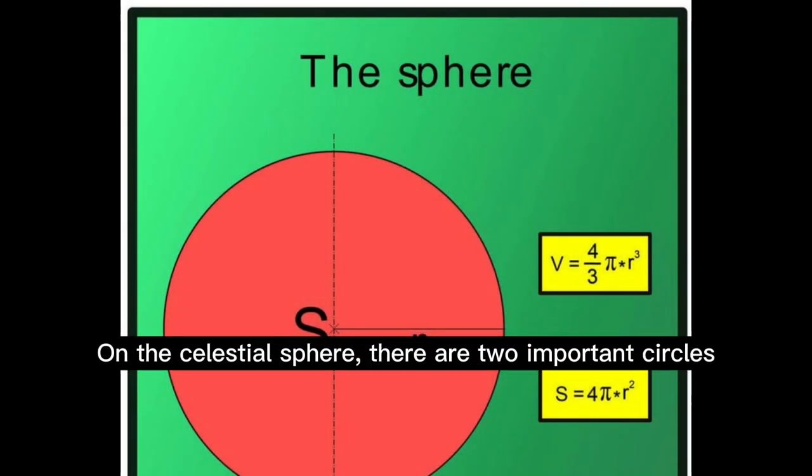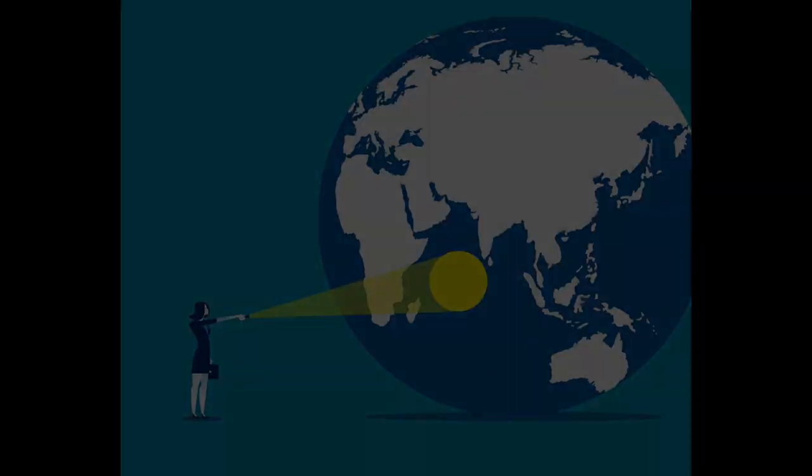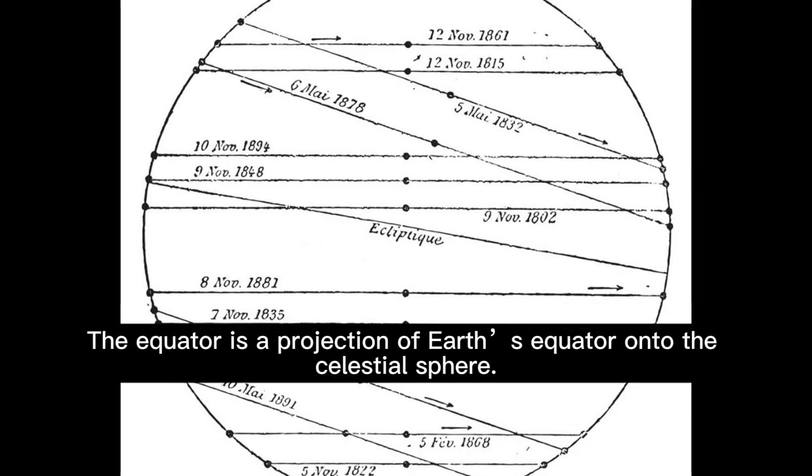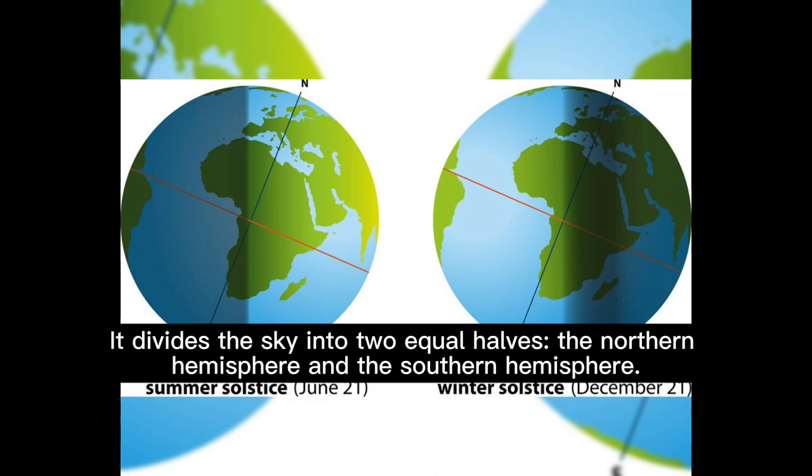On the celestial sphere, there are two important circles that help us locate objects in the sky: the equator and the ecliptic. The equator is a projection of earth's equator onto the celestial sphere. It divides the sky into two equal halves, the northern hemisphere and the southern hemisphere.